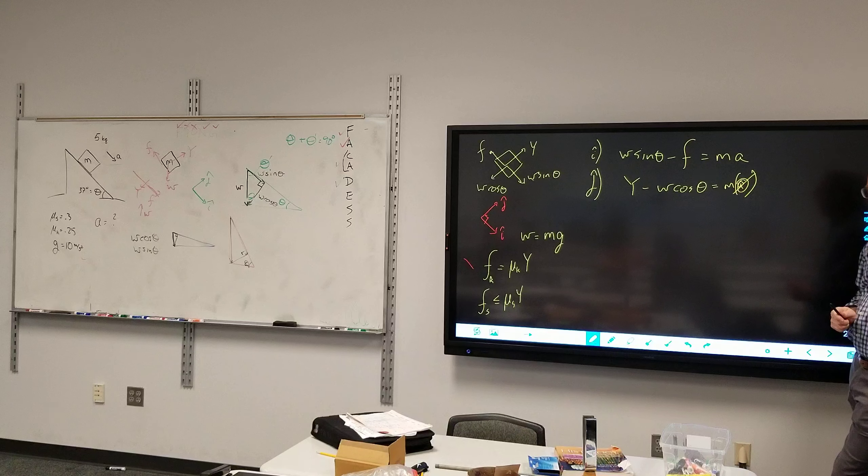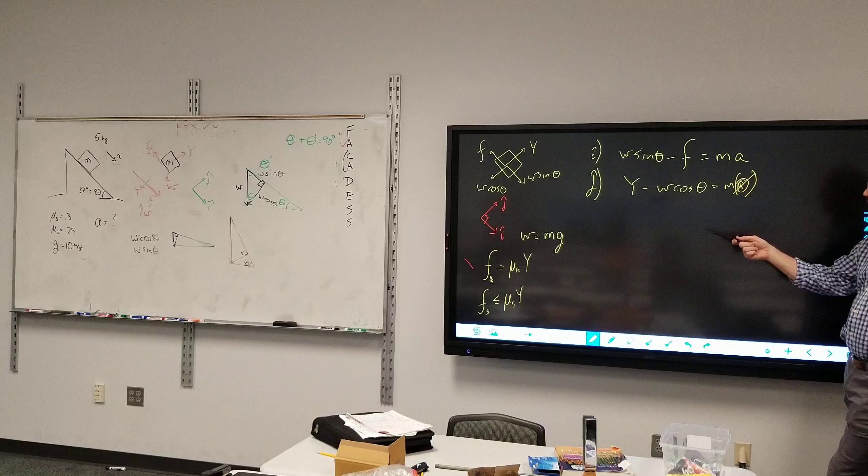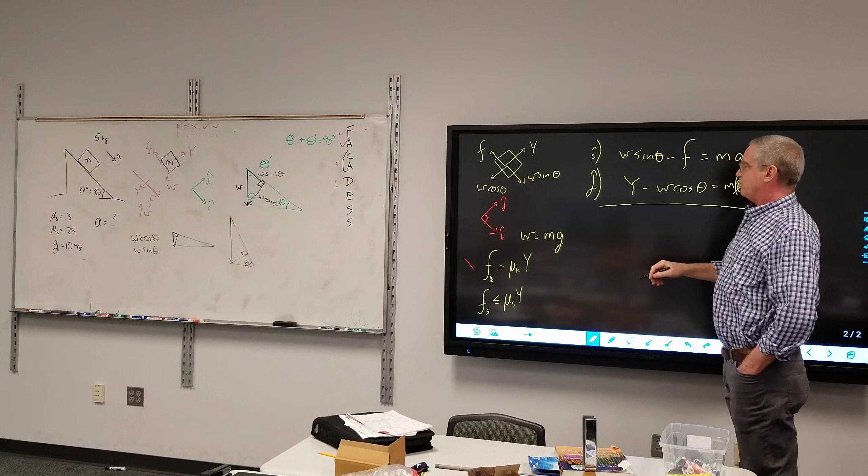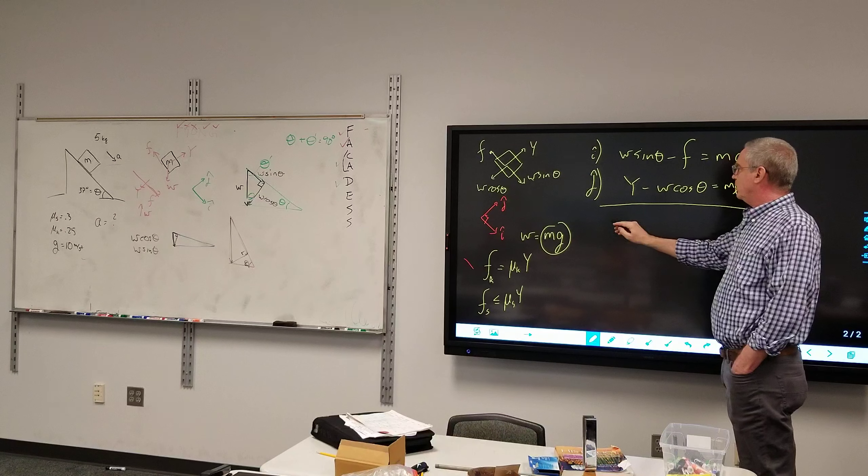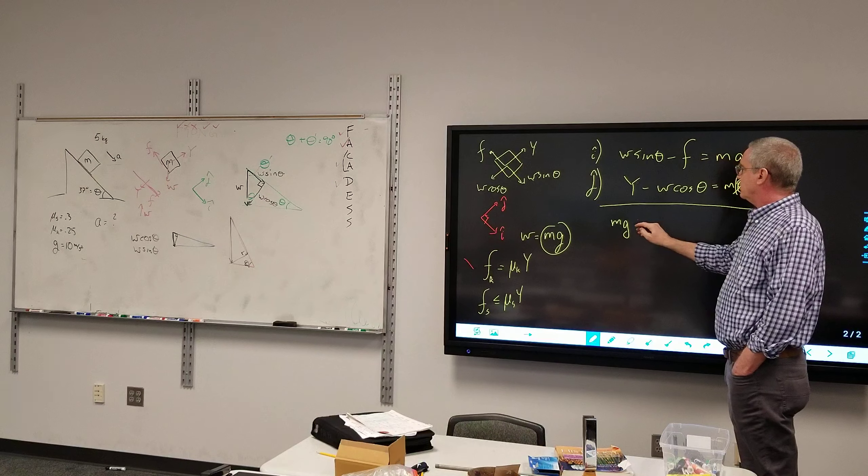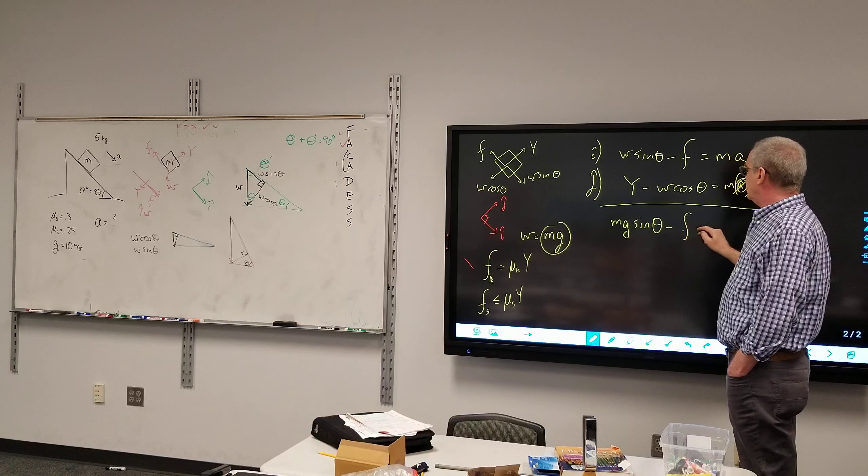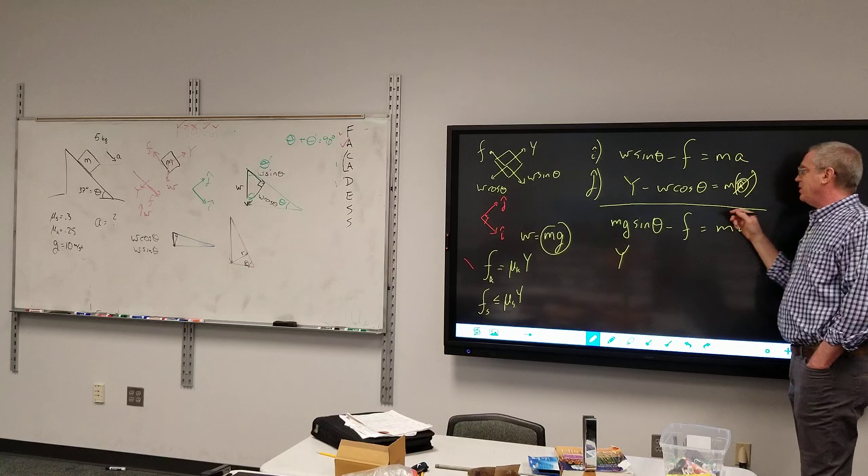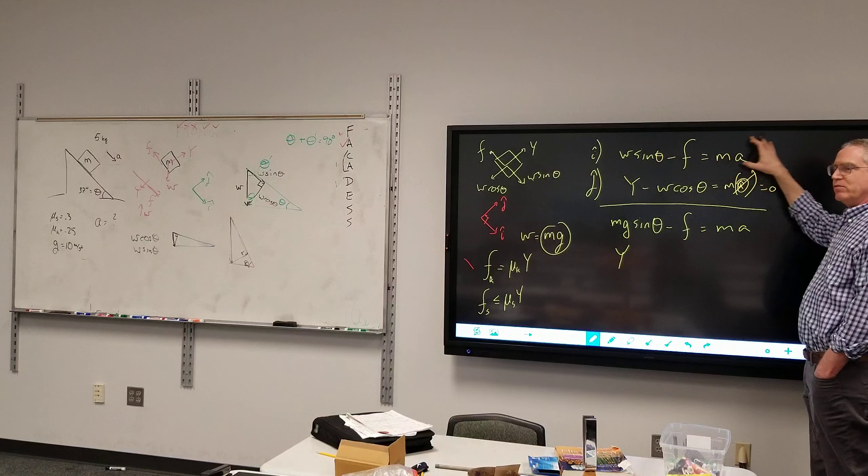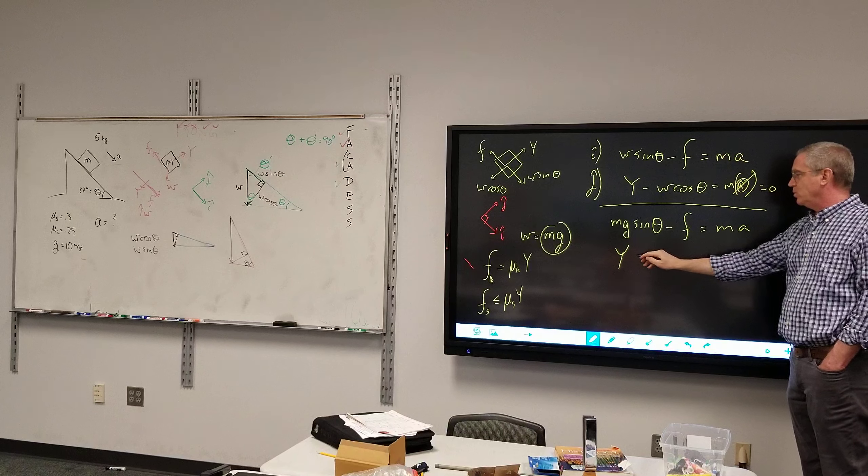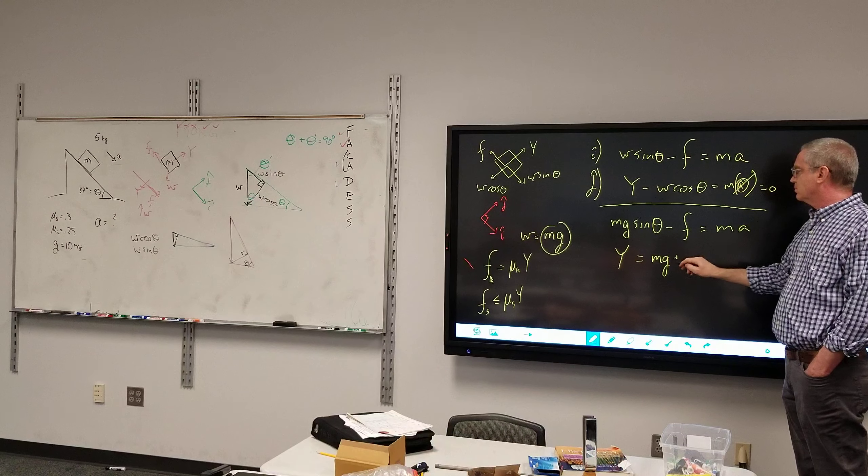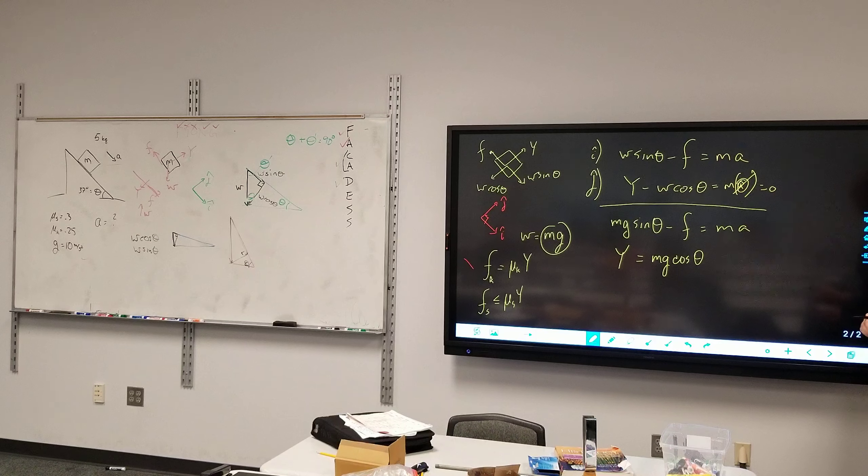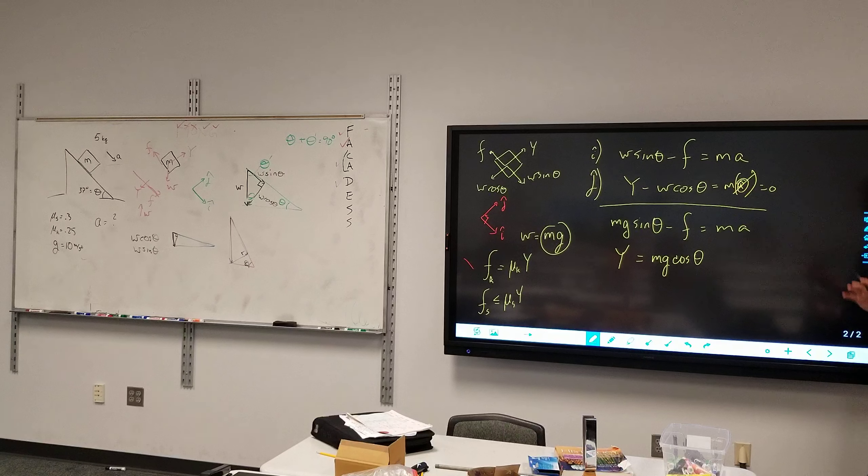So these are the two formulas. W equals mg, that's what we're talking about. Simple enough. We'll plug that in. So it's just substitution. We're taking this and plug it in wherever there's a W. So I have mg sine theta minus friction is equal to mass times acceleration. And Y. And at this point this is equal to zero.